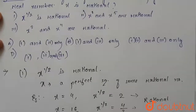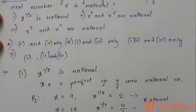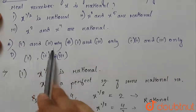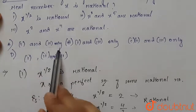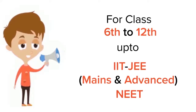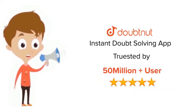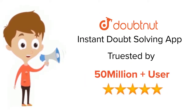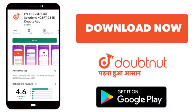So we have seen that only conditions 1 and 2 imply that x is rational. Therefore option A is the correct answer. Thank you everyone. For class 6 to 12th, IIT JEE, and NEET level, trusted by more than 5 crore students — download DoubtNet.